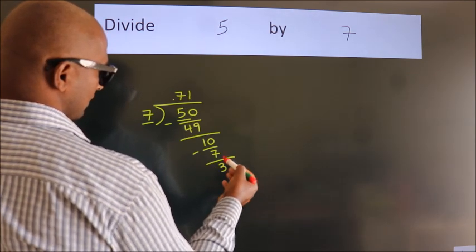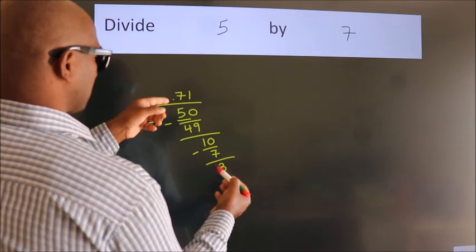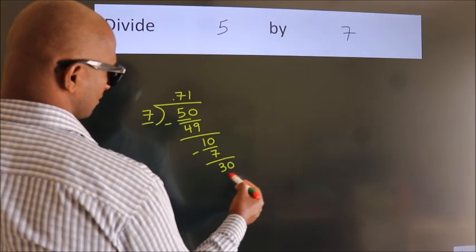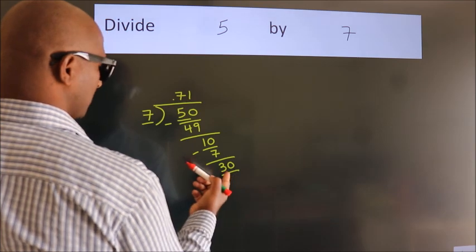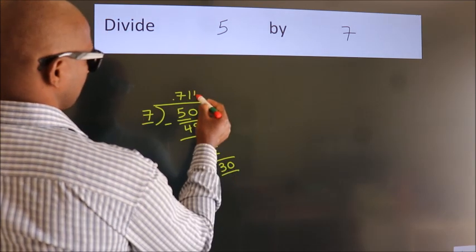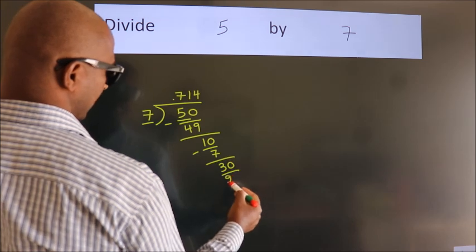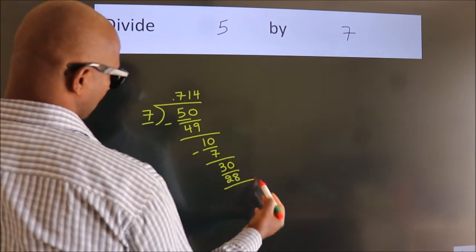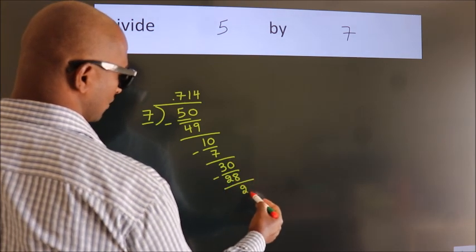We already have the decimal, so directly take 0. So 30. A number close to 30 in the 7 table is 7 times 4 equals 28. Now we subtract and get 2.